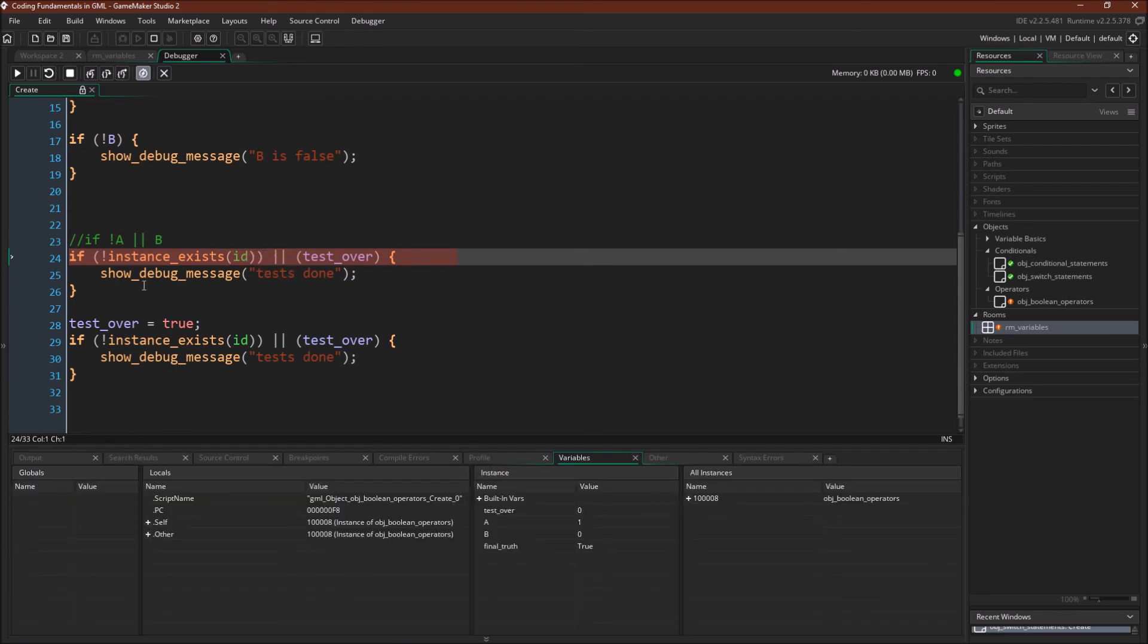Now we have our more complicated example. Here we're checking for whether or not this instance, the instance that is running this code, exists. Obviously, it does. You can see it over here. And whether or not test is over. Test is over right now is false.